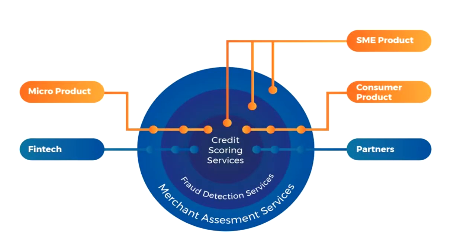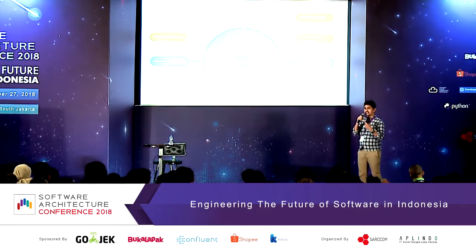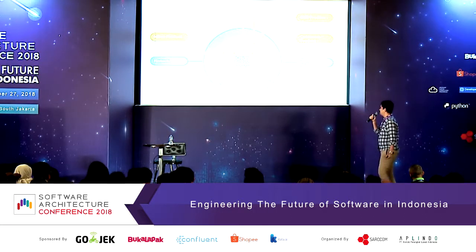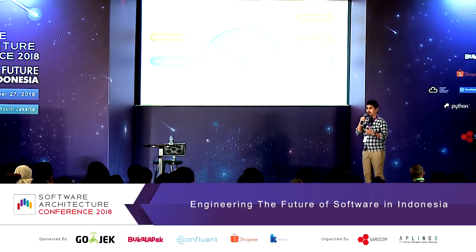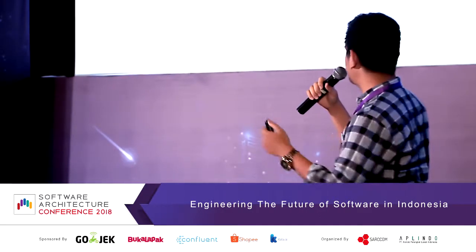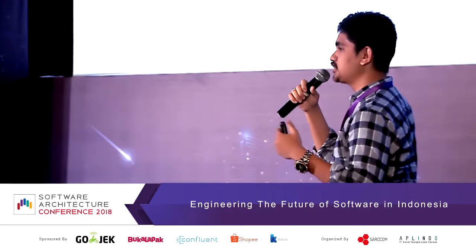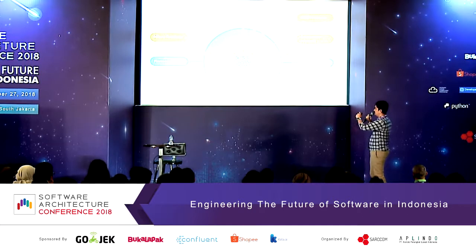Let me briefly explain why we picked fraud detection as our important use case. As a bank, risk is at the heart of our business. There are three types of main risk: credit scoring, fraud detection, and how to assess proper merchants as business partners. That's why fraud detection is one of our most important problems to solve, enabling us to grow our business further.